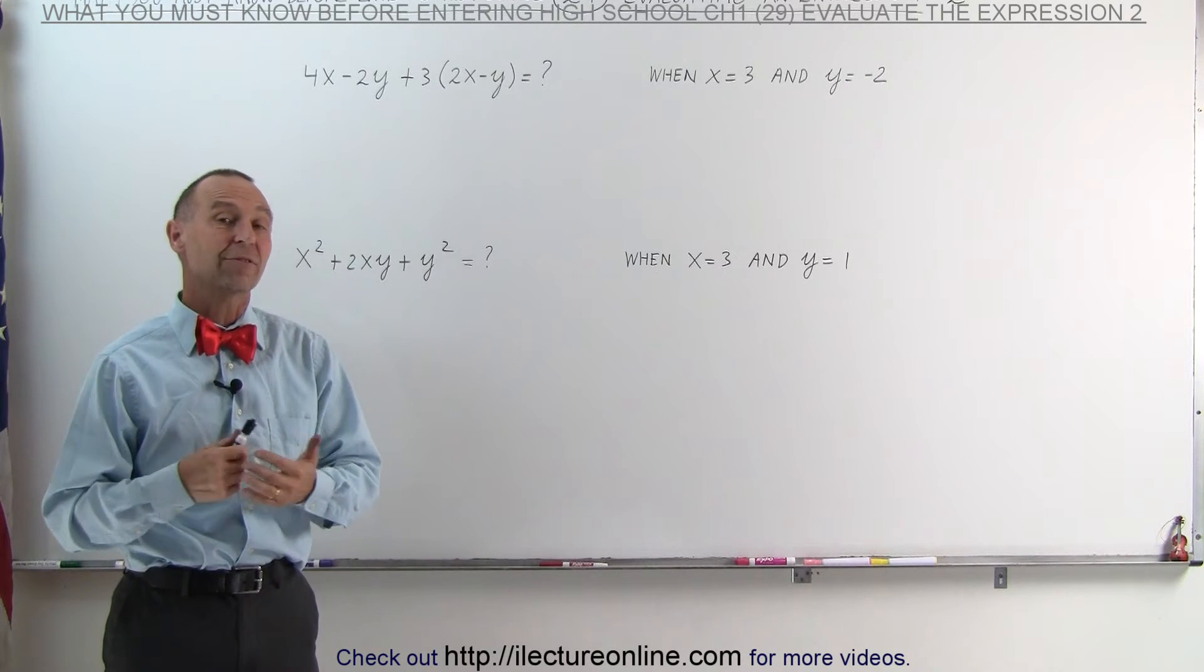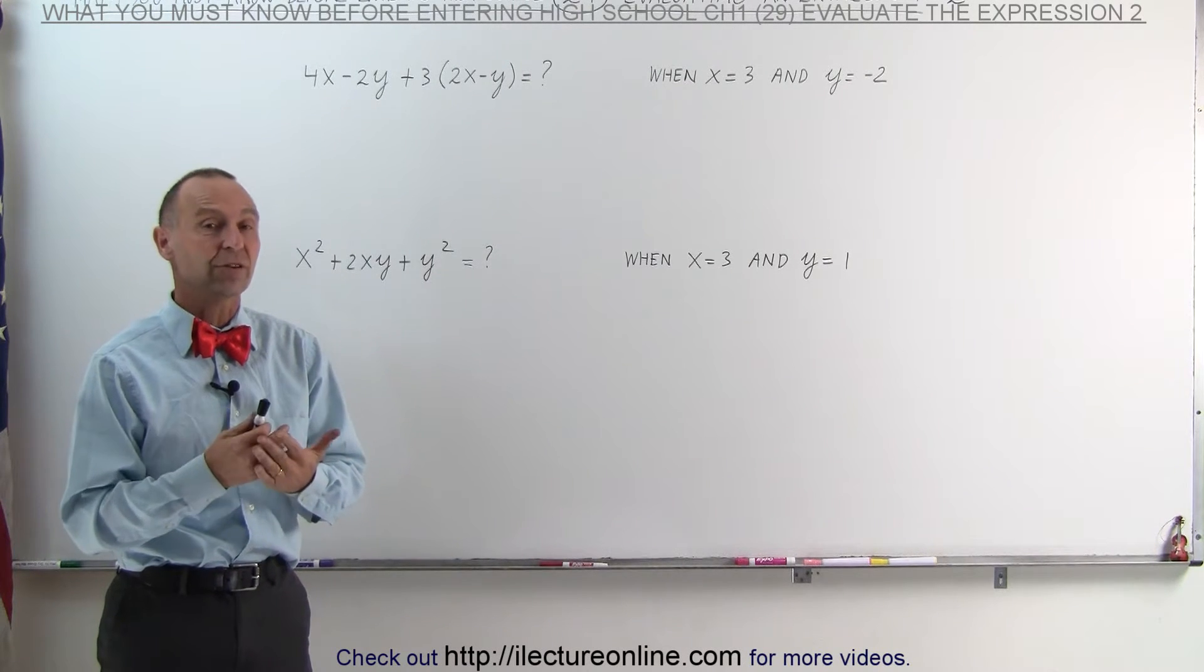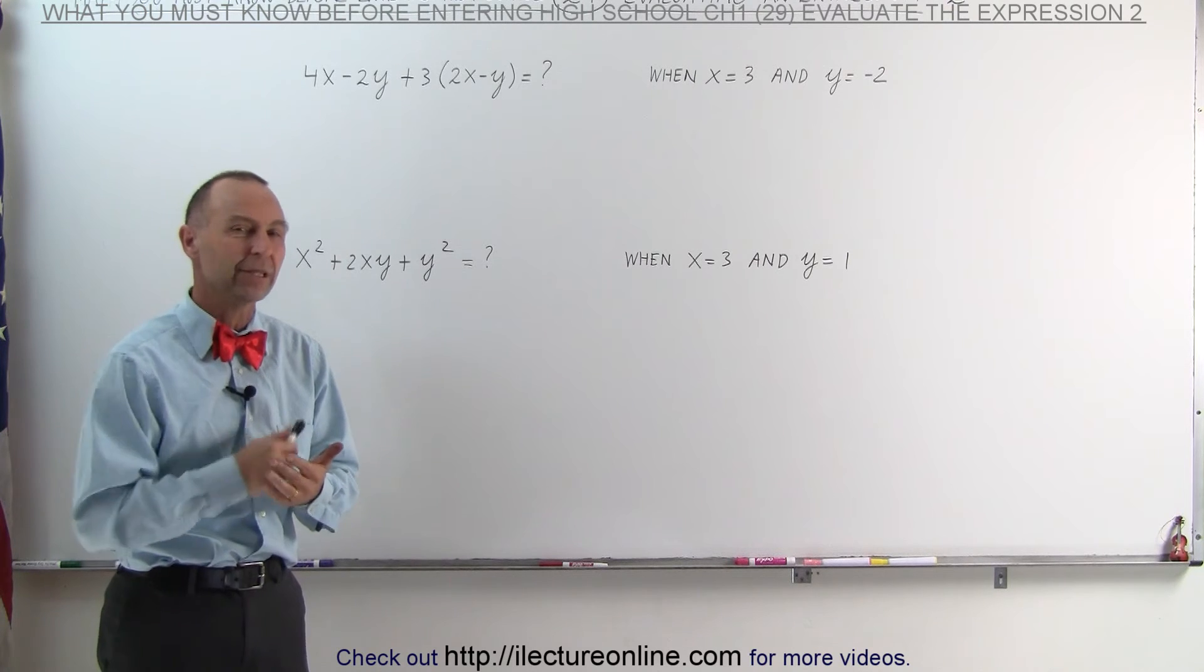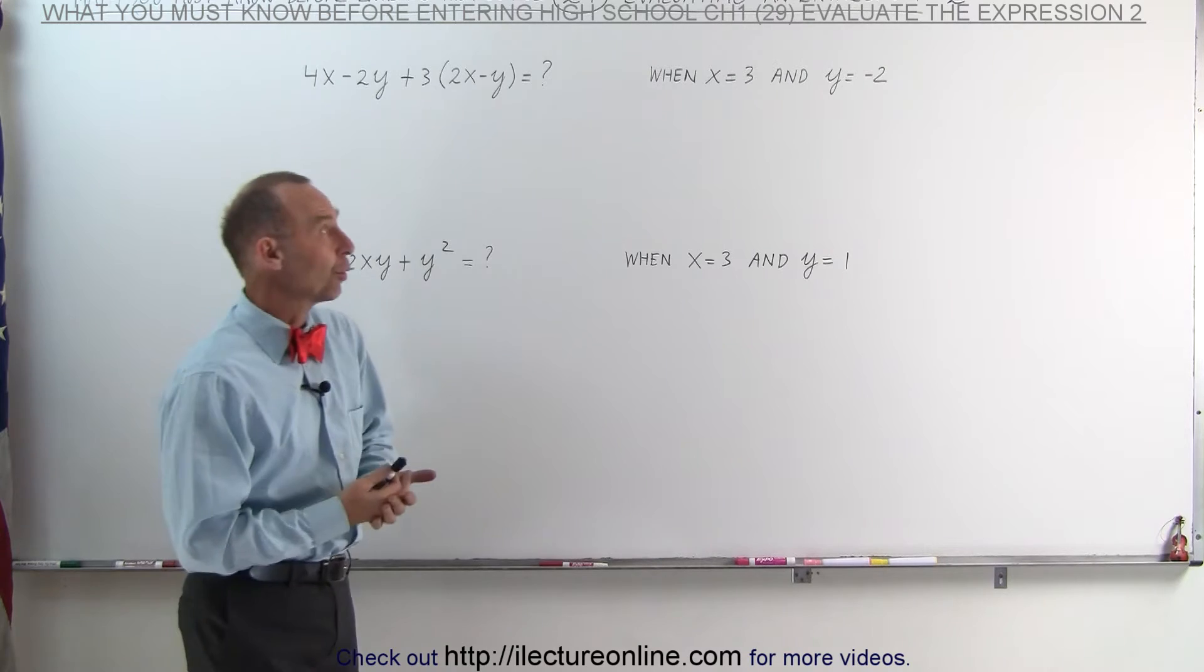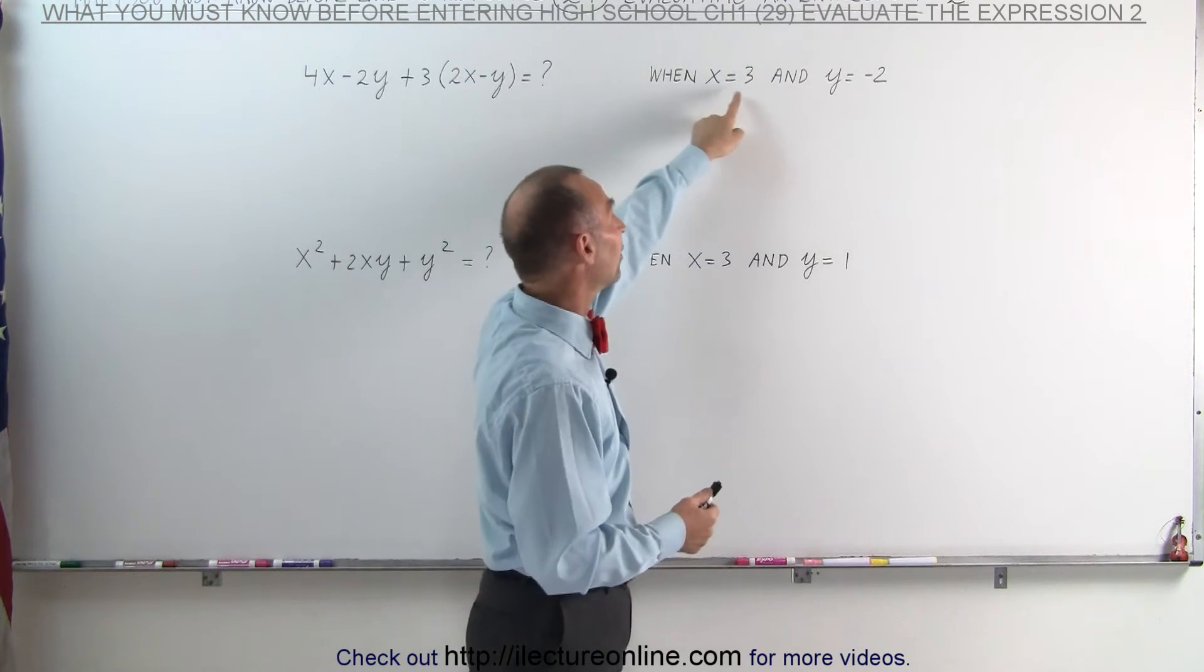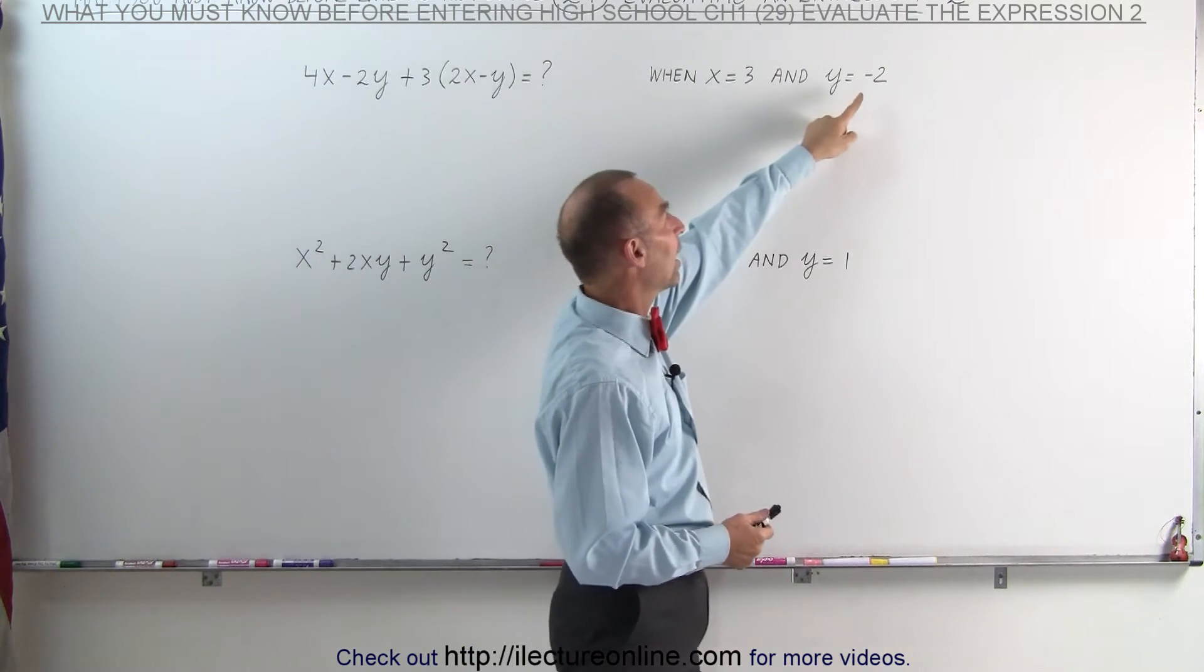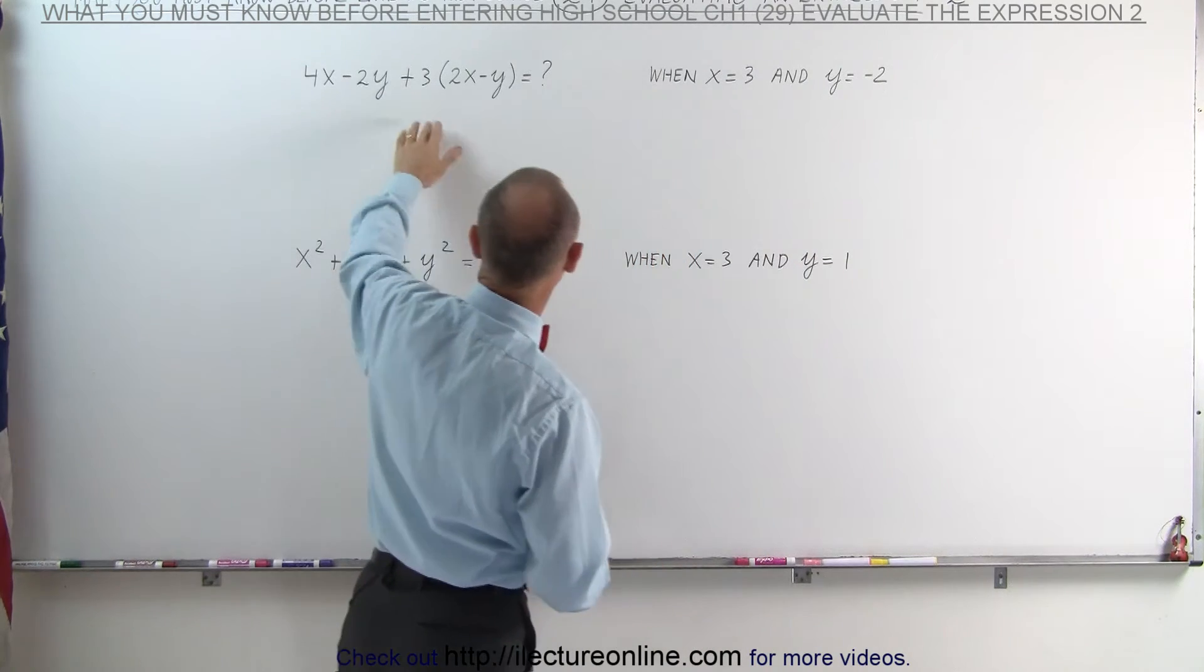Welcome to Electronline. Here we have examples with expressions where there's more than one variable, and we're asked to evaluate the expressions. We must always be given the value for the unknowns. In this case, x equals 3 and y equals negative 2 in our first example.